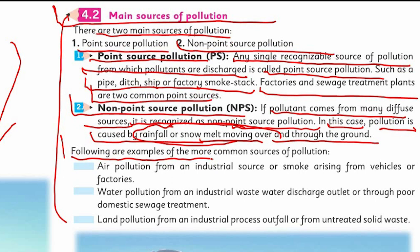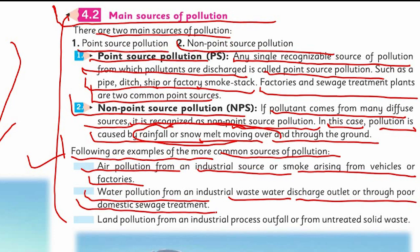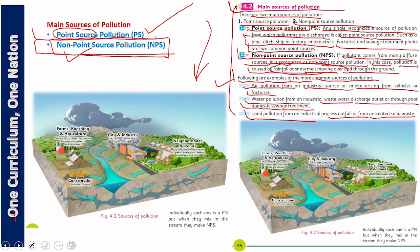Following are examples of the more common sources of pollution. Number one: air pollution from an industrial source or smoke arising from vehicles or factories. Number two: water pollution from an industrial wastewater discharge outlet or poor domestic sewage treatment. Number three: land pollution from an industrial process outfall or from untreated solid wastes. You can see in this picture that this is the ground and this is the underground water — pollutants enter and mix into the water going underground.